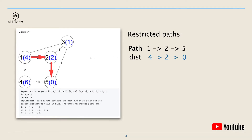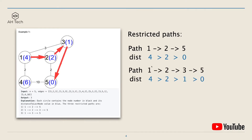The first restricted path in this example is path 1 to 5. This is a restricted path because the distance from node 1 to node 5 is 4, which is bigger than the distance from node 2 to node 5 which is 2. The other restricted path is path 1-2-3-5, and the distances respectively are 4, 2, 1, and 0, in monotonic decreasing order.